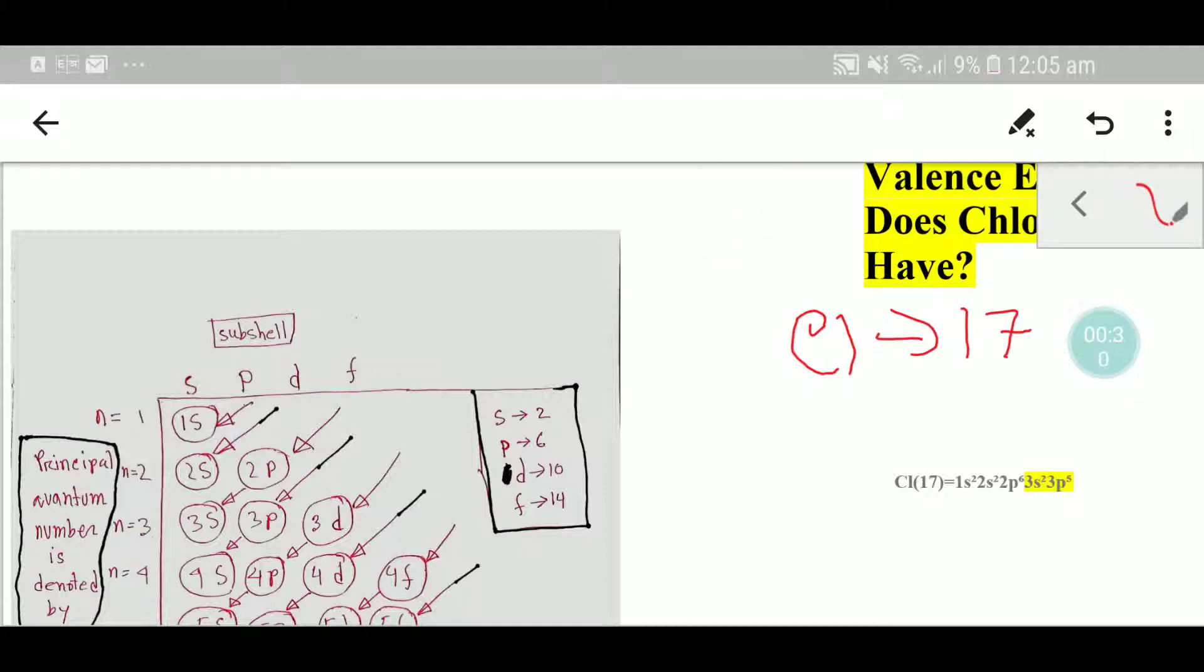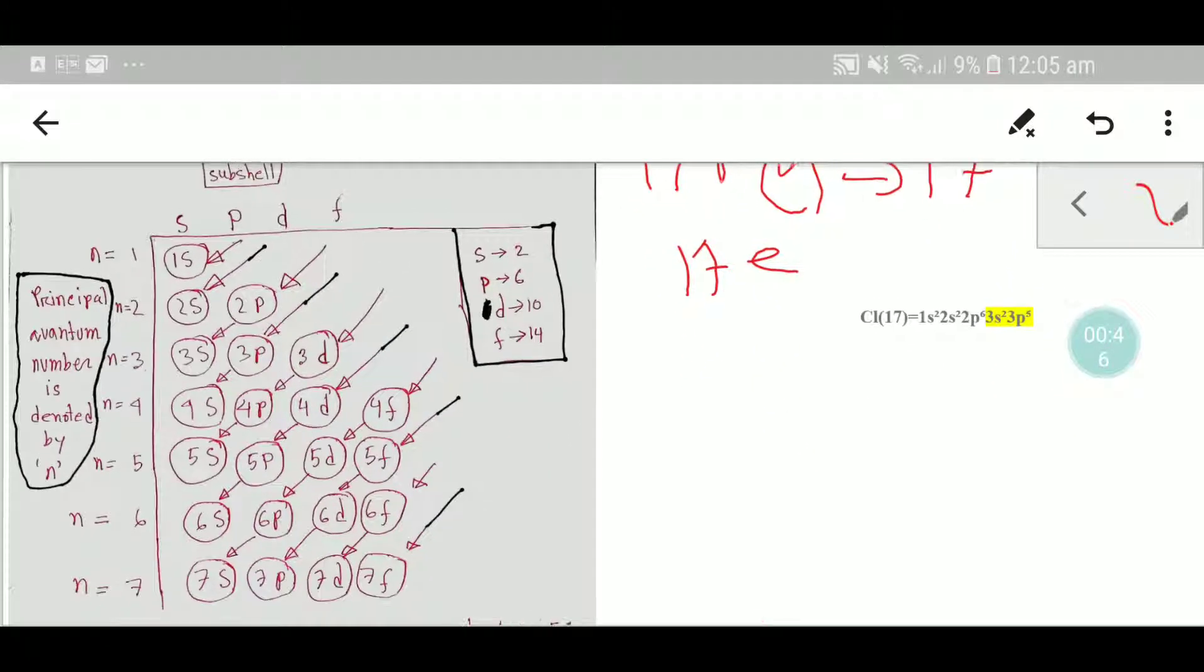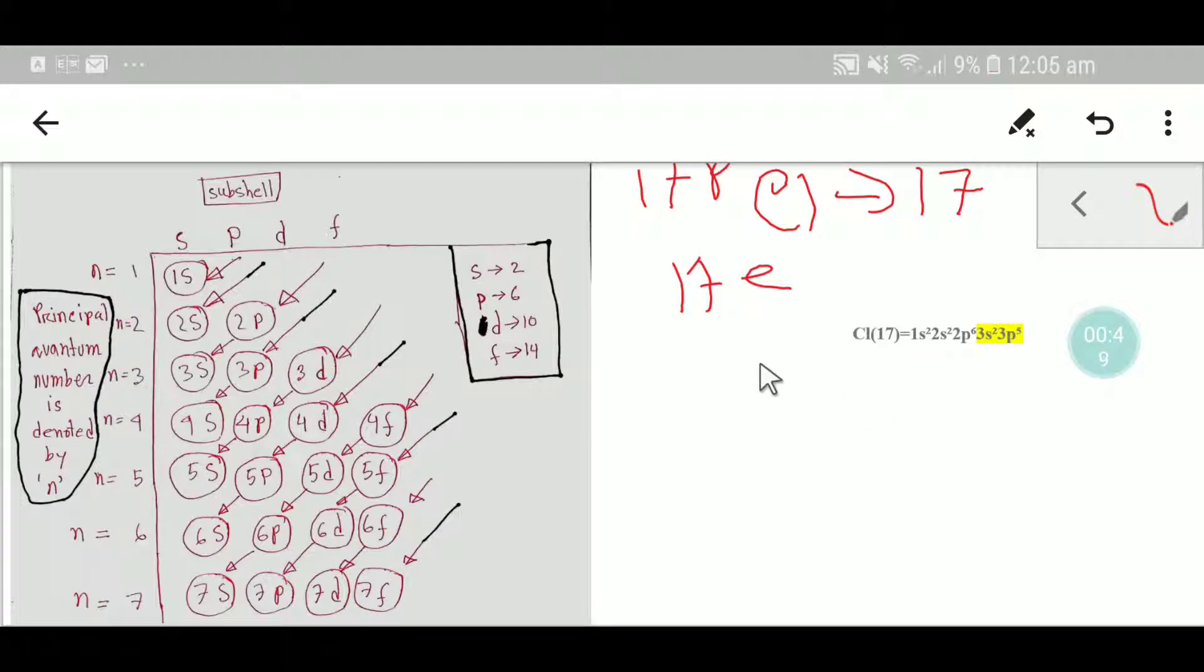This means that we have 17 electrons and 17 protons. However, the charge of a proton is positive and the charge of an electron is negative. So in the second step, we need to do the electronic configuration of chlorine.